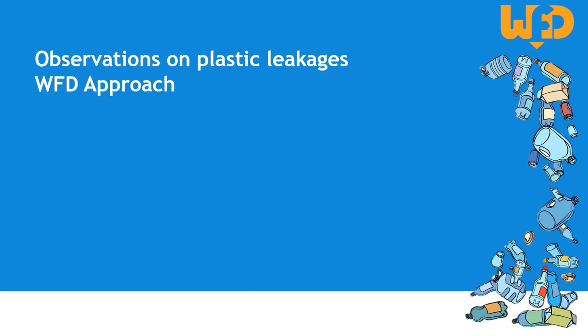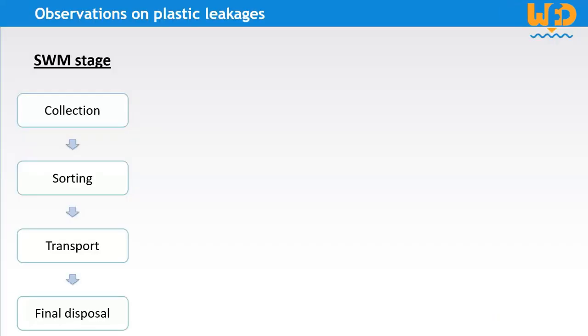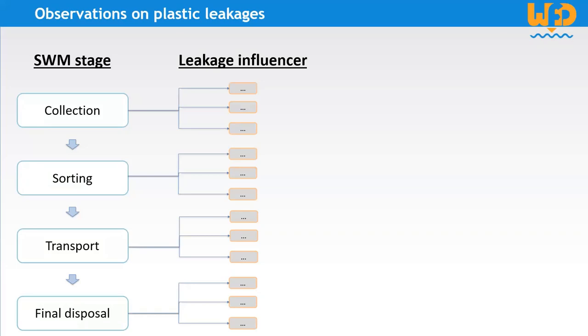Now that we have seen the main quantitative input data for the Waste Flow Diagram, let's review the main qualitative data, which comes from field observations on plastic leakages and their fate in the environment. For leakages, observations are made for each stage of the solid waste management system, from collection to final disposal. The objective is to identify key characteristics having a direct impact on the probability of plastic leakage, also called leakage influences.